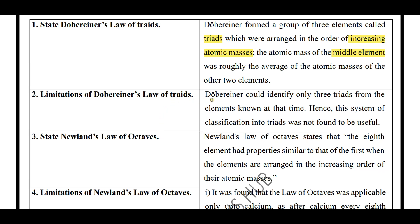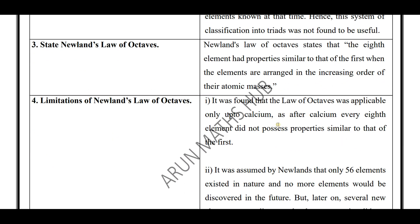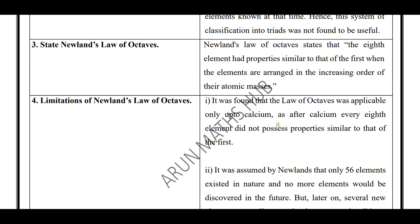What are the limitations of Dobereiner's Law of Triads? Dobereiner could identify only three triads from the elements known at that time, hence this system of classification into triads was not found to be useful. Dobereiner's Law of Triads and its limitations can be asked for one mark in the examination.